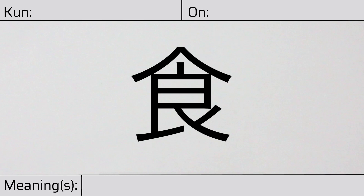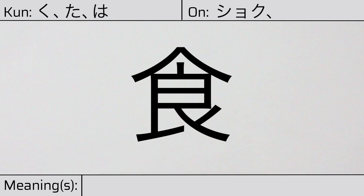Welcome to this lesson on Japanese kanji. Today, we'll be discussing this character. This kanji has kunyomi, or Japanese readings of ku, ta, or ha. And it has onyomi, or Chinese readings of shoku or jiki. This character has the meanings eat or food.